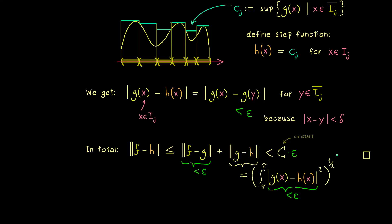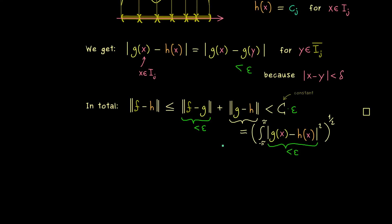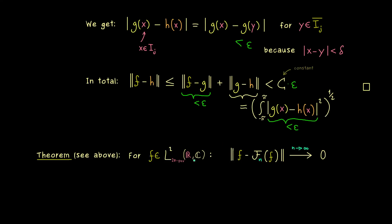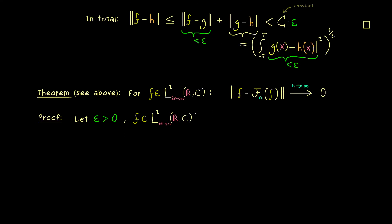Now we use this result to finally prove the main theorem. For every L2 function, the Fourier series converges to f with respect to the L2 norm. We have already proven this for step functions, so with our approximation we can extend the proof to every L2 function. We take an arbitrary epsilon and an arbitrary L2 function f, and by the proposition above we choose a step function h closer than epsilon to f.